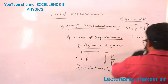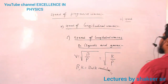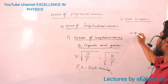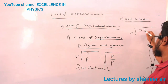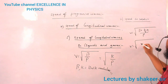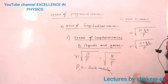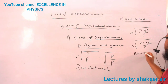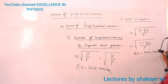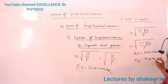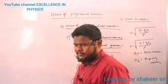Speed of longitudinal waves in solids is given by v equals the square root of (B + 4/3 R) divided by ρ, or equivalently square root of (k + 4/3 η) divided by ρ. Here B and k are bulk modulus, and R and η are rigidity modulus.